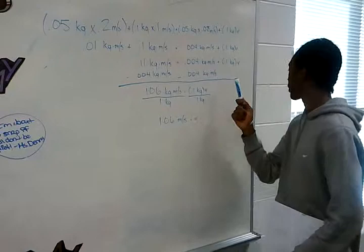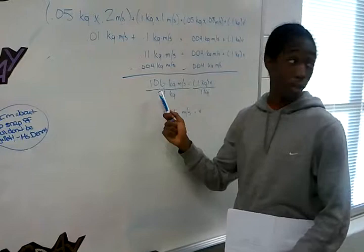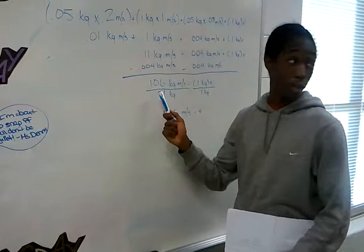You start by setting up both sides. You get 0.106 kg·m per second, and you divide 0.1 kg·m per second to get the V2 velocity. Divide those by both sides, and you get 1.0 meters per second.